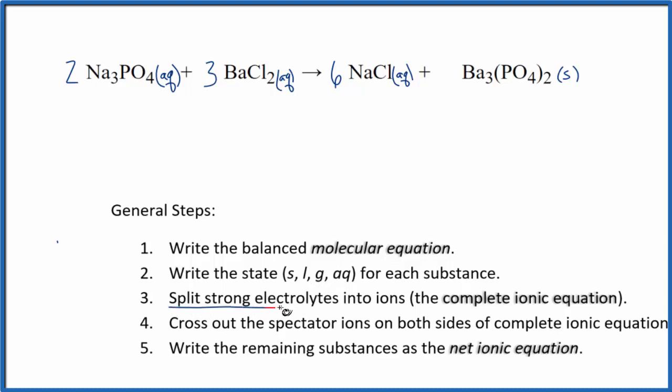Next, we're going to split the strong electrolytes apart into their ions, and that'll be the complete ionic equation. The strong electrolytes are the ones with Aq after - they're going to dissolve in water. So we need the charges. Sodium's in group 1, that's a 1+ charge. Phosphate, that's a polyatomic ion. Need to remember that one, it's always 3-.